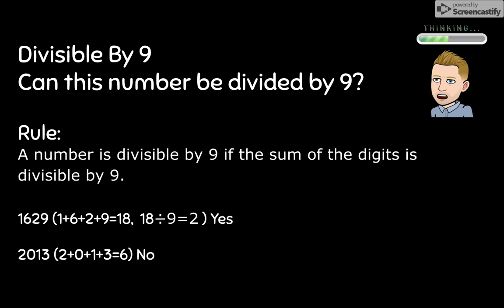So 1 plus 6 plus 2 plus 9 equals 18. 18 divided by 9 is 2, which is a whole number. So 1629 is divisible by 9.